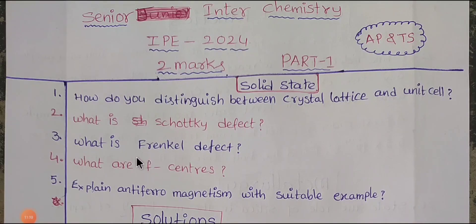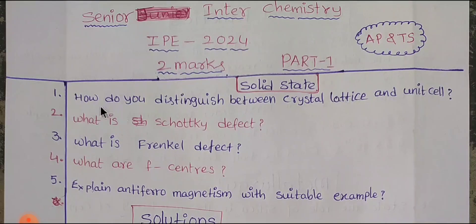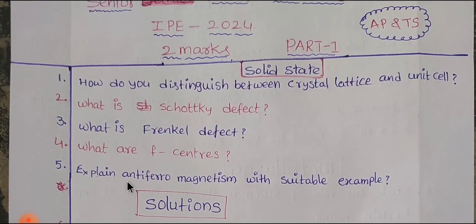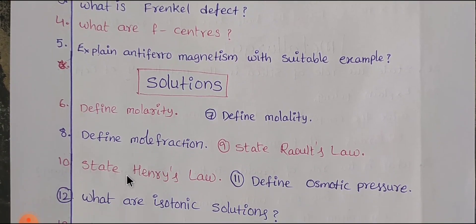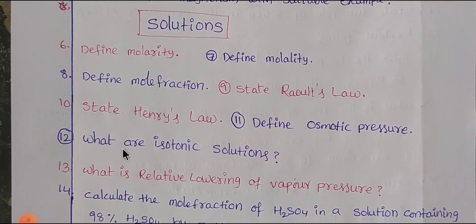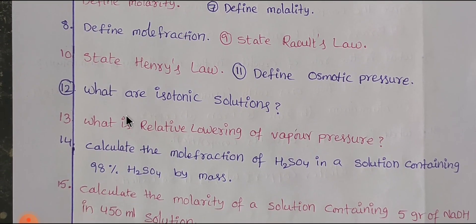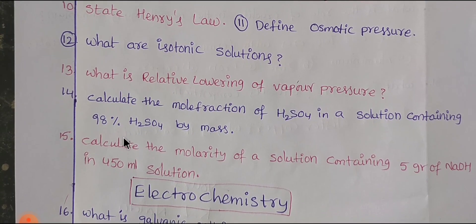Students, last chapter-wise you have 2 marks and 5 marks. For Solutions, you have to use the formula for Bragg's equation for 2 marks. That means 4 marks can be reduced to 2 marks. Solutions generally use 4 plus 2 marks. The definitions of molality, mole fraction, Raoult's law, Henry's law, osmotic pressure, and isotonic solutions are all 2-mark topics.